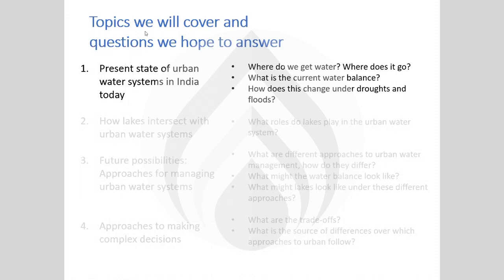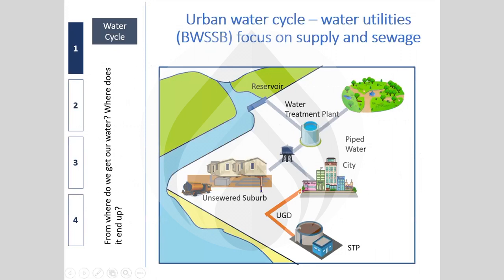The first topic is the present state of urban water systems. Water utilities — city water supply and sewerage boards — think about water supply as follows: there's a reservoir (KRS for Bangalore, Red Hills and Poondi for Chennai). A pipeline brings water to a treatment plant, where it's treated to drinking water quality, then pumped to overhead pumping stations and into the pipe supply network.